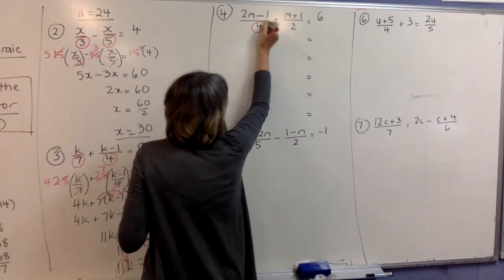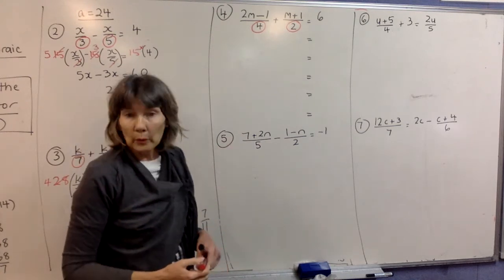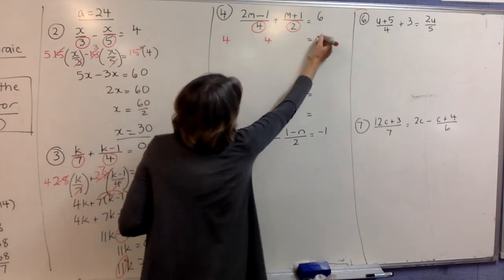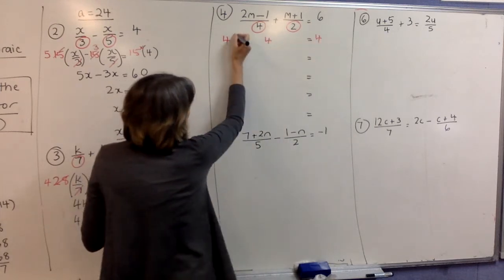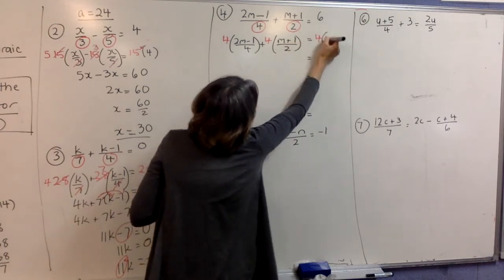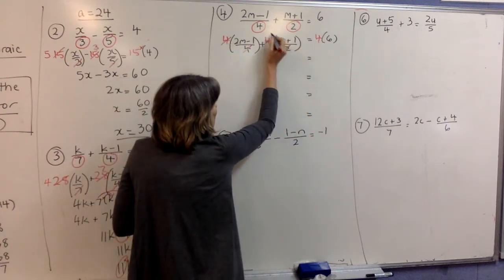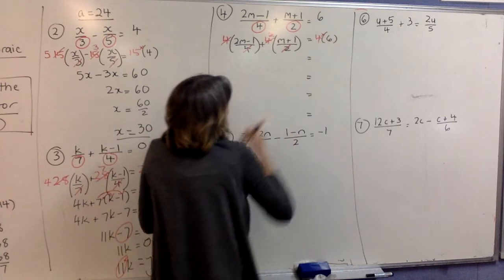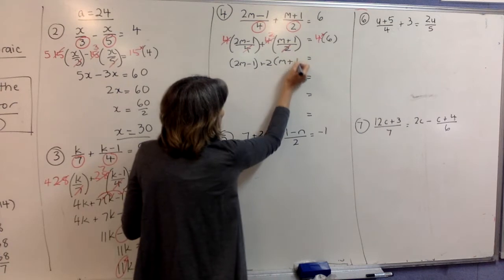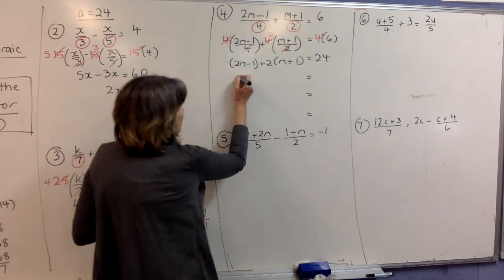For question four, our denominators are 4 and 2. In this case you don't just multiply 4 and 2 together — 4 would be your lowest common denominator because both 4 and 2 go into 4. So I'm going to use 4 this time. Copy everything in brackets. The two 4s will cancel completely, and this 2 will cancel with the 4 and leave a 2. Write what you see.